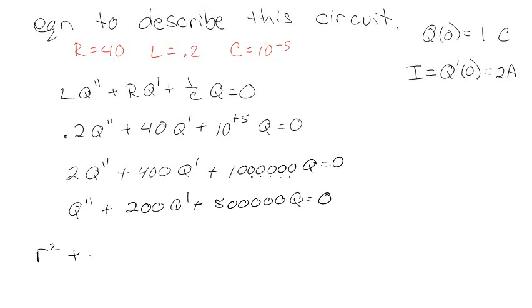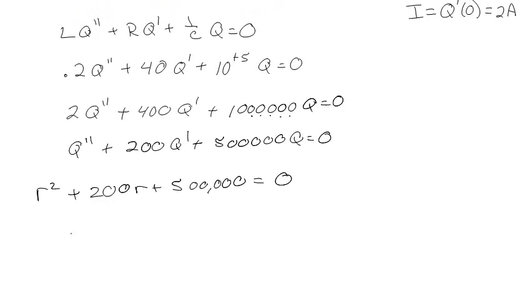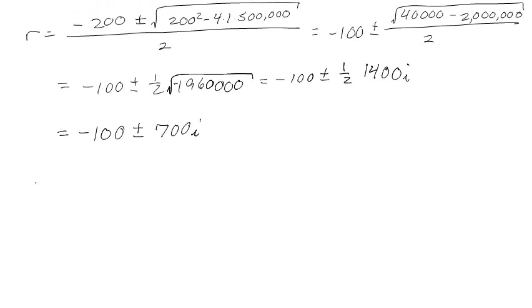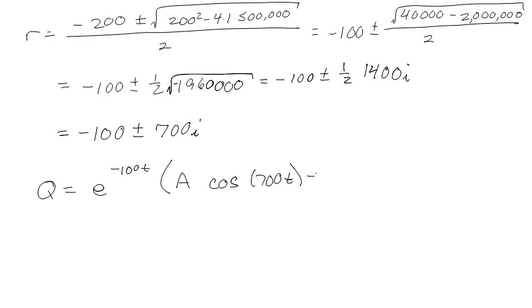Now I can write a characteristic equation and solve it. Using the quadratic formula gives complex roots, so the solution takes the form Q = e^(−100t)·[A·cos(700t) + B·sin(700t)].